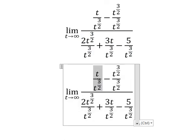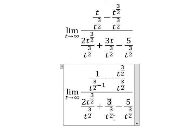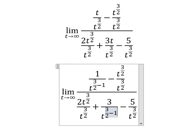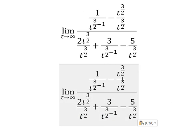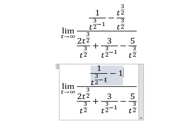So if we simplify this one, this one t to the power of 1, so we put negative 1 on the denominator. Similar for the second one.